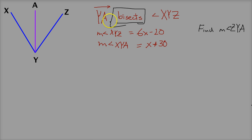So in this one, ray YA is bisecting, which means it breaks into two equal parts, so that means this is equal to this.